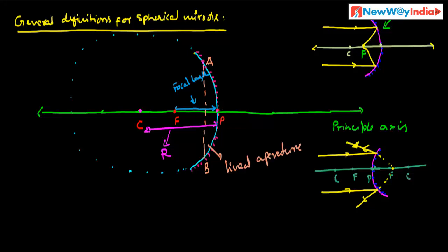To summarize: the pole P is the midpoint of the mirror; the center of curvature C and pole lie on the principal axis; the principal focus F is behind the mirror for a convex mirror and in front for a concave mirror; focal length is the distance between pole and principal focus; and radius of curvature is the distance between pole and center of curvature. Thank you.